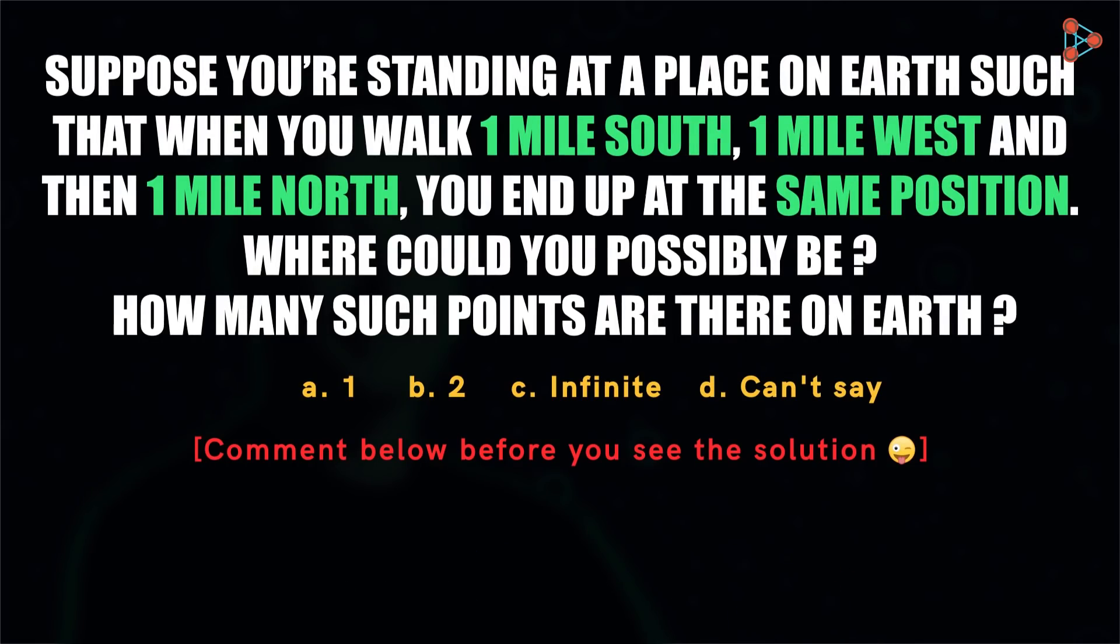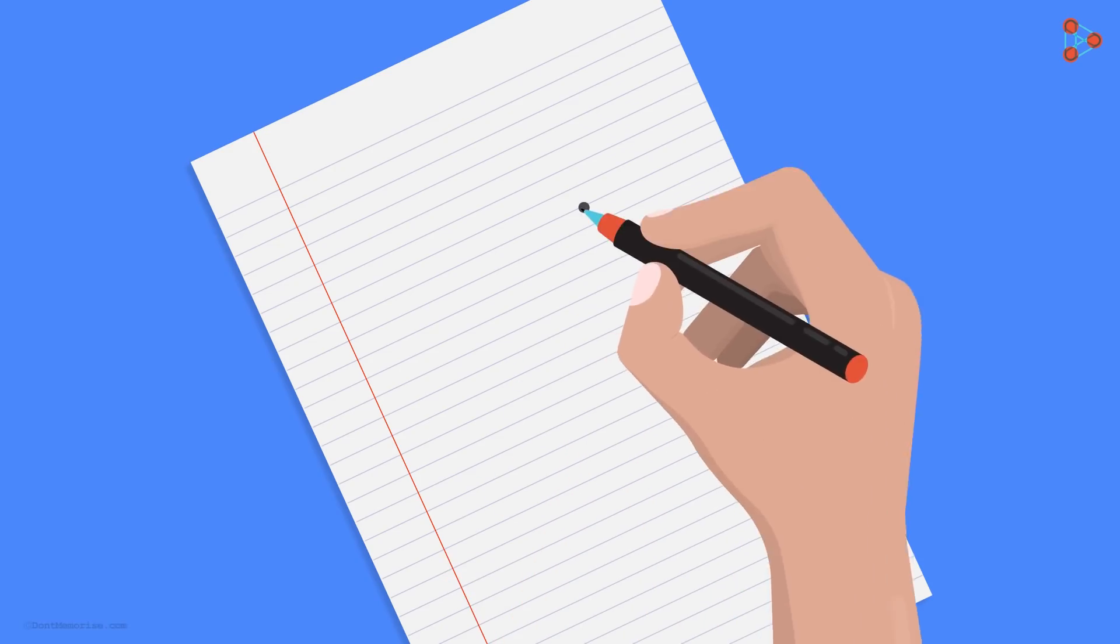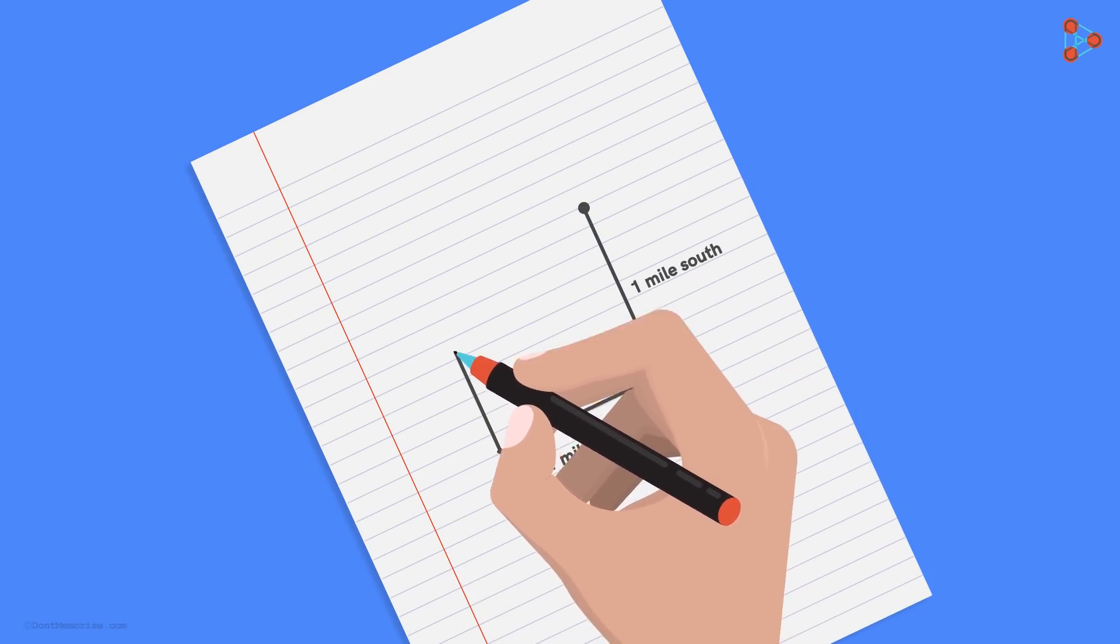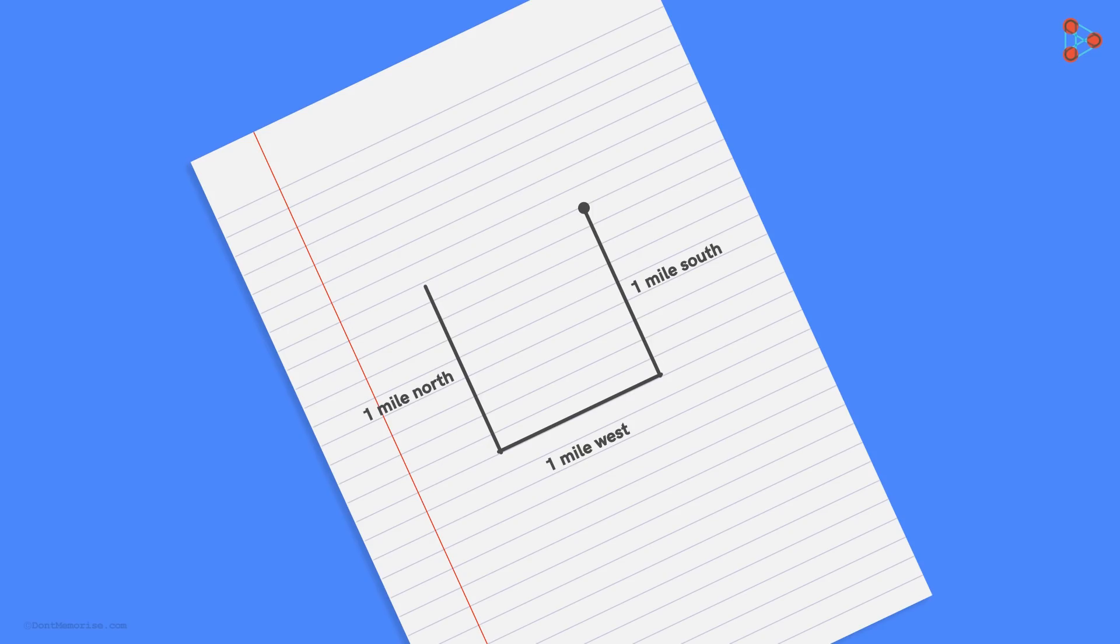Ready? Let's start. Some of us may think it's impossible. It is impossible if we try to represent the problem on a piece of paper. One mile south, one mile west, and one mile north. We land up one mile to the west of where we started, right? But is the earth flat?